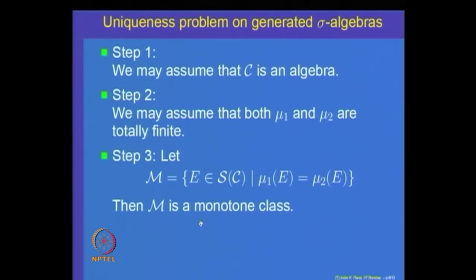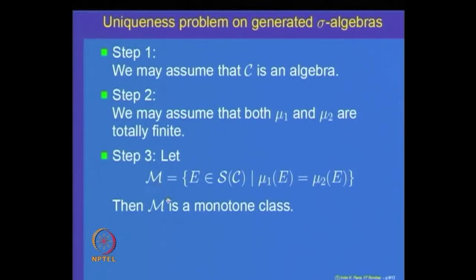The proof proceeds as follows. First, we observe that M is a monotone class. Once we prove M is a monotone class, we observe that since mu_1 and mu_2 are equal on C, we have C ⊆ M. Since C is an algebra and C ⊆ M and M is a monotone class, the monotone class generated by C must be inside M. But since C is an algebra, the monotone class generated by C equals the sigma algebra generated by C — a theorem we have already proved. So M = S(C).